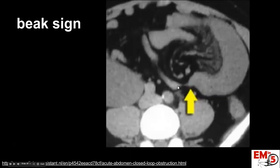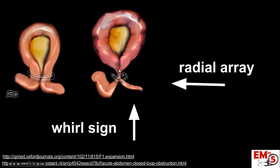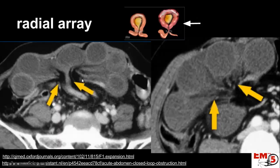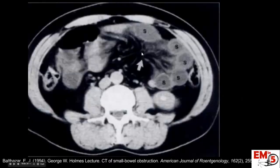Another sign to look for is the beak sign, where the bowel is getting pinched off. We can also look for signs of twisting or herniation. The whirl sign is seen when you're looking at the bowel on end — you can see it's all twisted up. If you're looking at it from the side, that's called the radial array, where you can see the twisted point with all the bowel coming out from it. Here's another example of a radial array with mesenteric congestion and bowel wall enhancement.